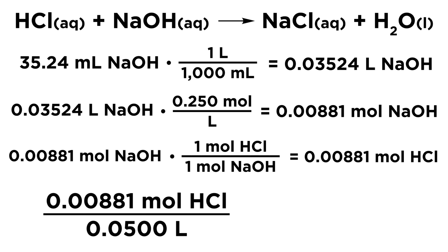And so concentration is moles per liter. So we take our moles of acid and we divide by 0.0500 liters.